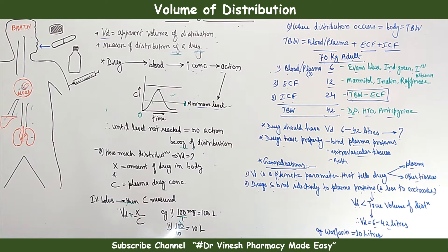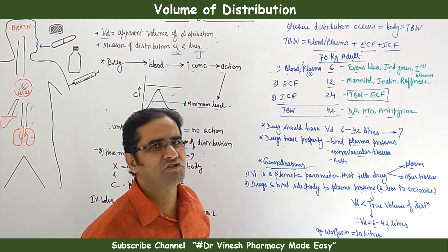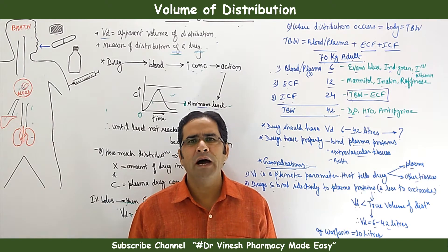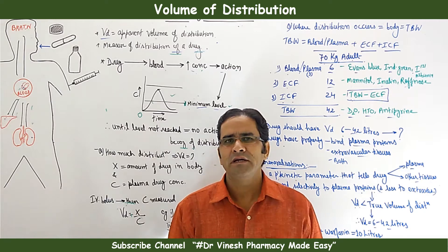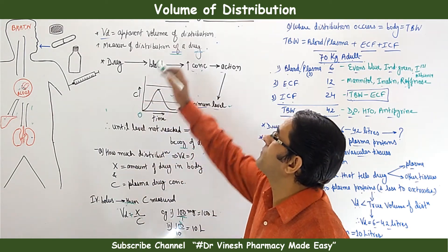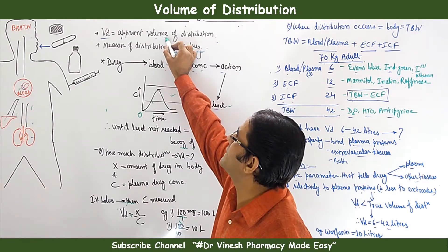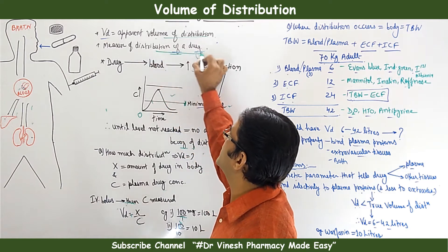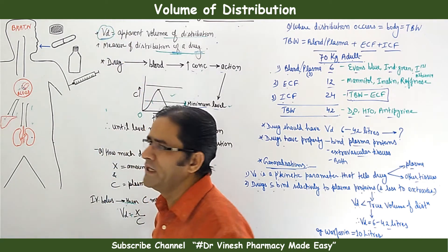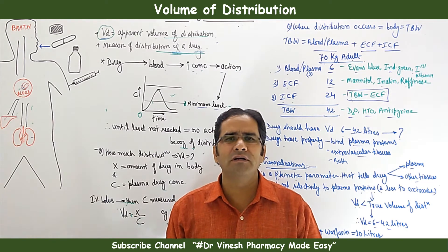Welcome friends. Today we are going to discuss the topic of Volume of Distribution. Just as bioavailability tells us how much drug has been absorbed, in the same manner, how much drug has been distributed can be understood from the volume of distribution. This is also termed as apparent volume of distribution, and it is a measure of drug distribution, represented as Vd.